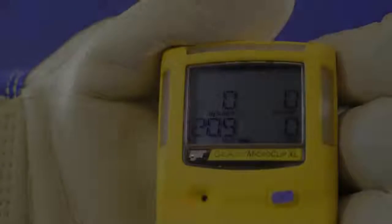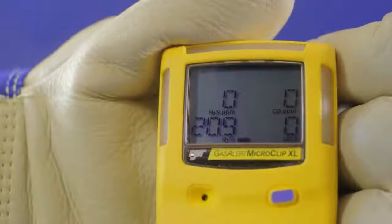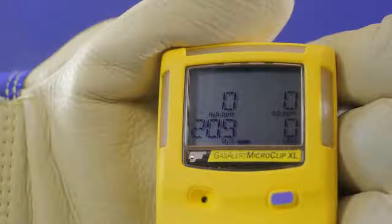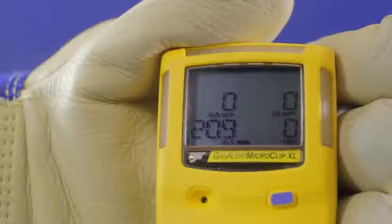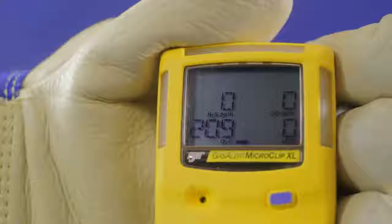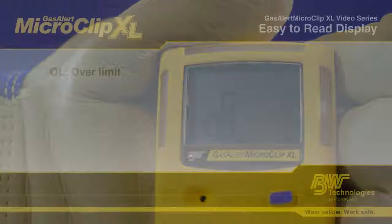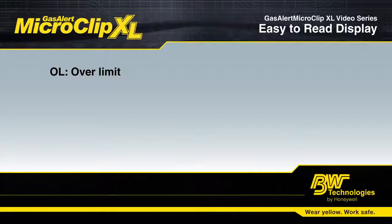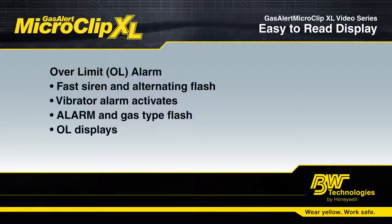If you are taking proper action and evacuating any time a low or high alarm is sounded, your Gas Alert Micro Clip XL should not go into STEL or TWA alarm. The fifth type of alarm is an OL, or Over Limit Alarm. This means that the level of gas in the environment is beyond what the sensor can measure. OL will flash in place of the reading of that sensor.